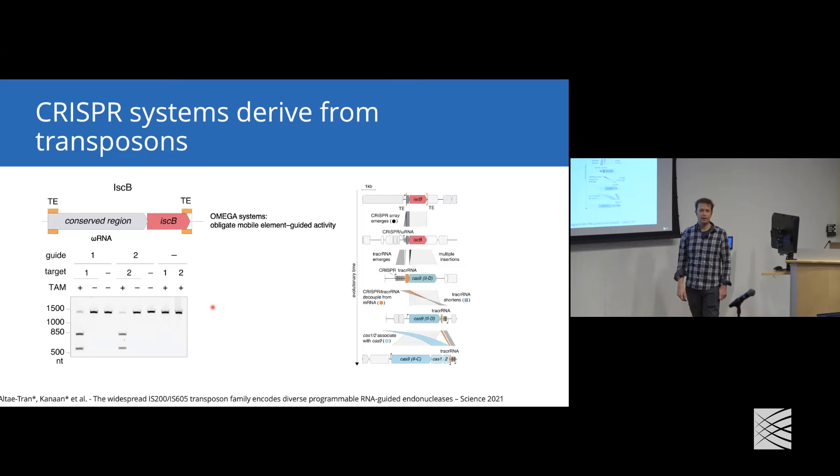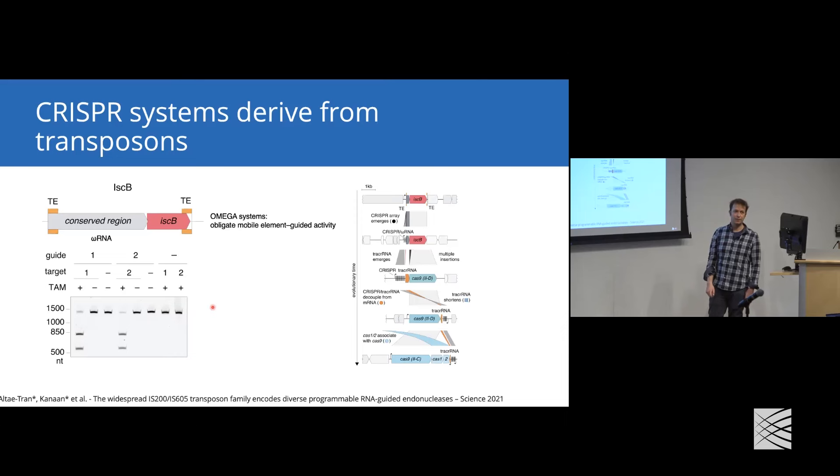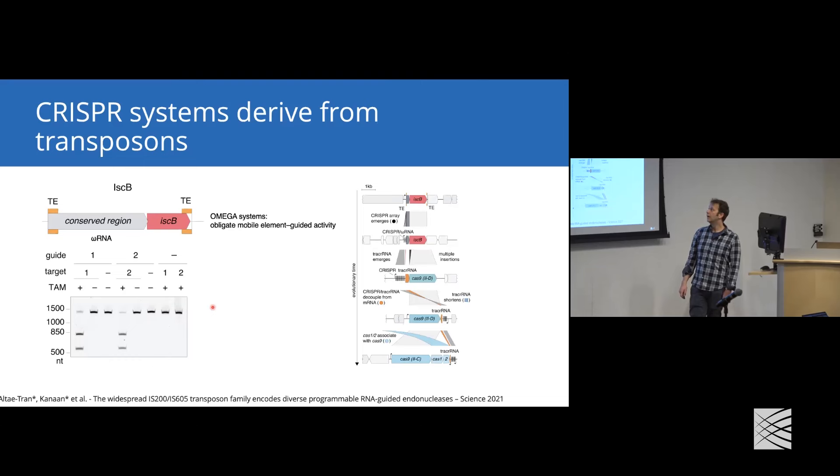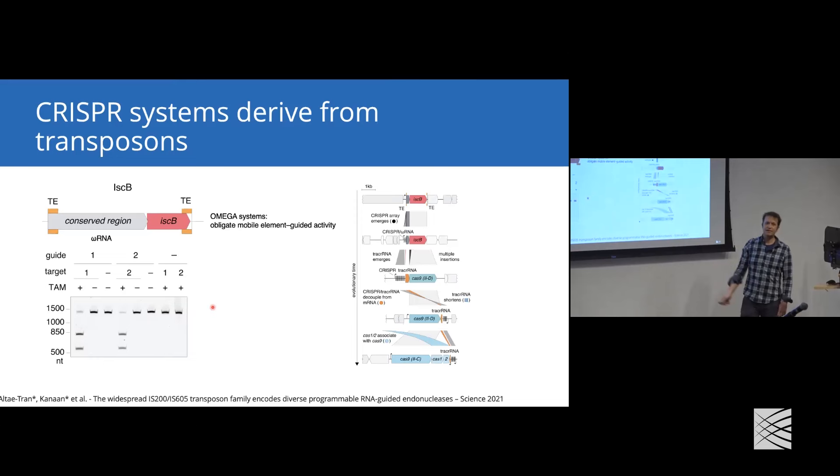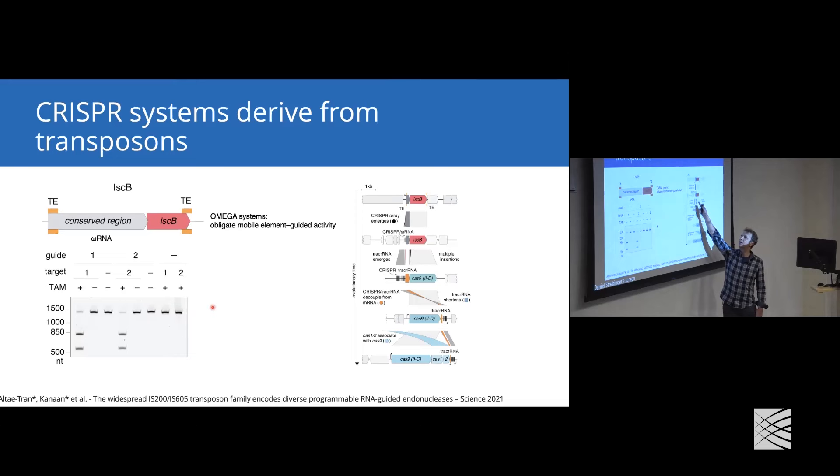If we reprogram the system, we can see that with target two and the TAM in target two, we can also get efficient induction of double-strand breaks, which means omega systems are indeed programmable endonucleases. This also allowed them to infer the evolutionary history of Cas9.